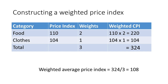We then work out the total weighted CPI for the two items: 220 plus 104 equals 324. To get the weighted average price index, we divide the weighted CPI by the total number of weights — 324 divided by 3 — which gives us a weighted price index of 108. Notice this differs from the non-weighted price index of 107, reflecting the greater weighting of food.